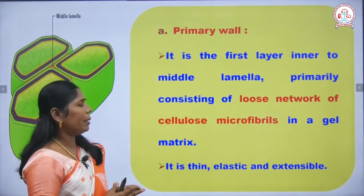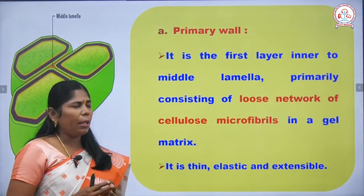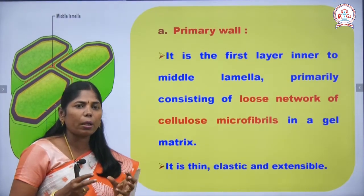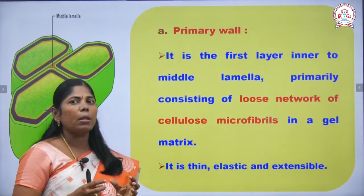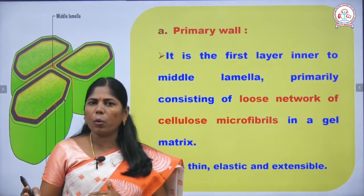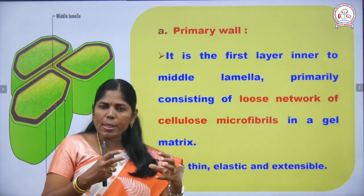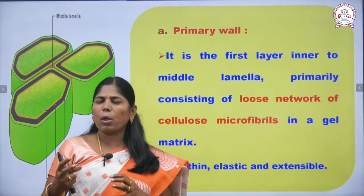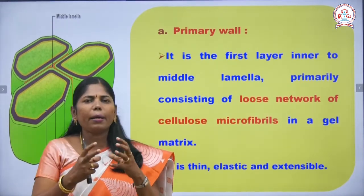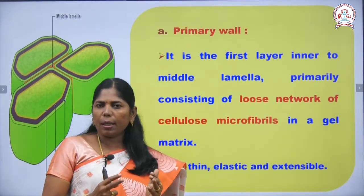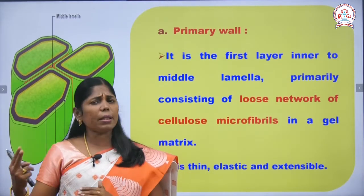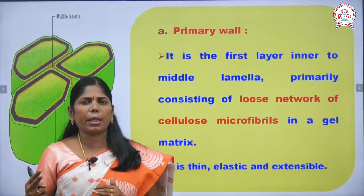The primary wall is next to the middle lamella and consists of a loose network of cellulose microfibrils. In the secondary wall, the microfibrils are compactly and tightly arranged — making it thick and inelastic, compared to the thin and elastic primary wall.